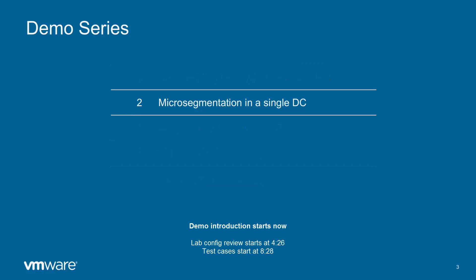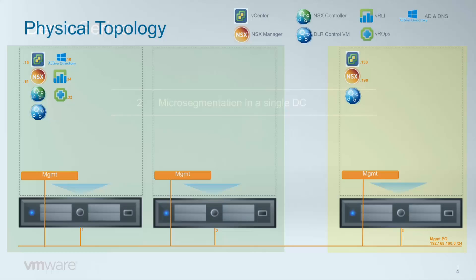So let's focus on the topic for today: micro-segmentation inside a single data center. This is the topology we are using in the lab. On the left hand side we have two ESXi servers which represent data center one, on top of which we have one vCenter, one NSX manager, all other NSX control plane components, one active directory, and some operations and visibility tools.